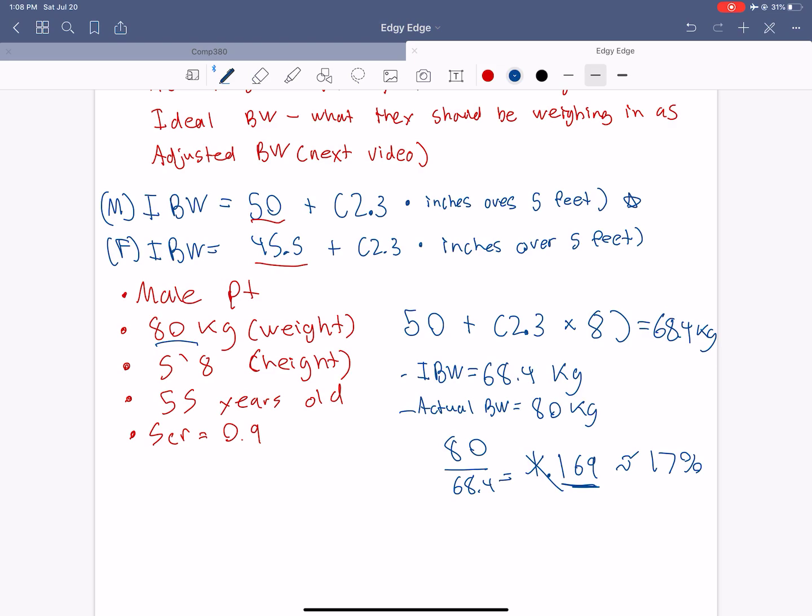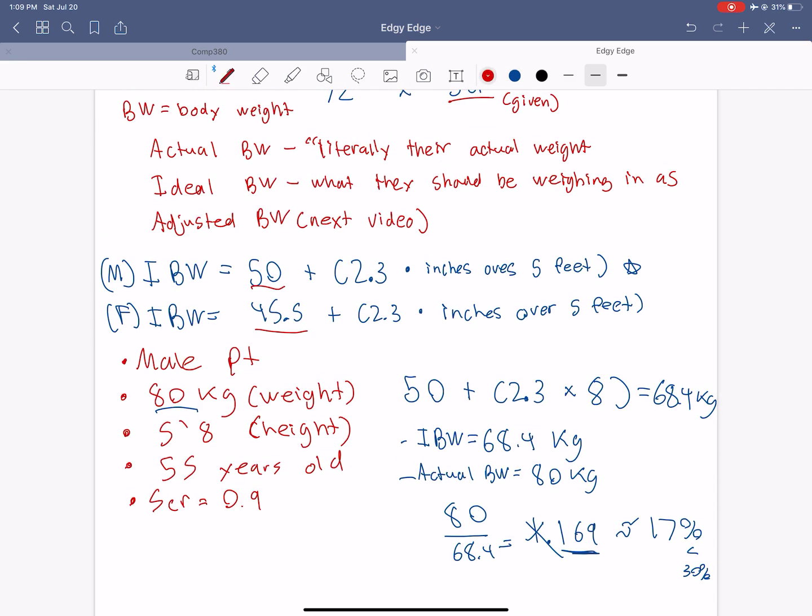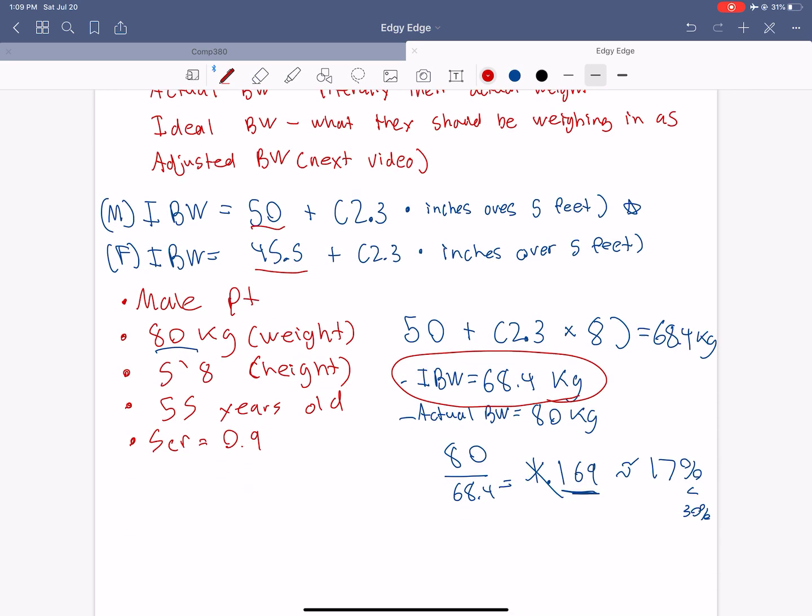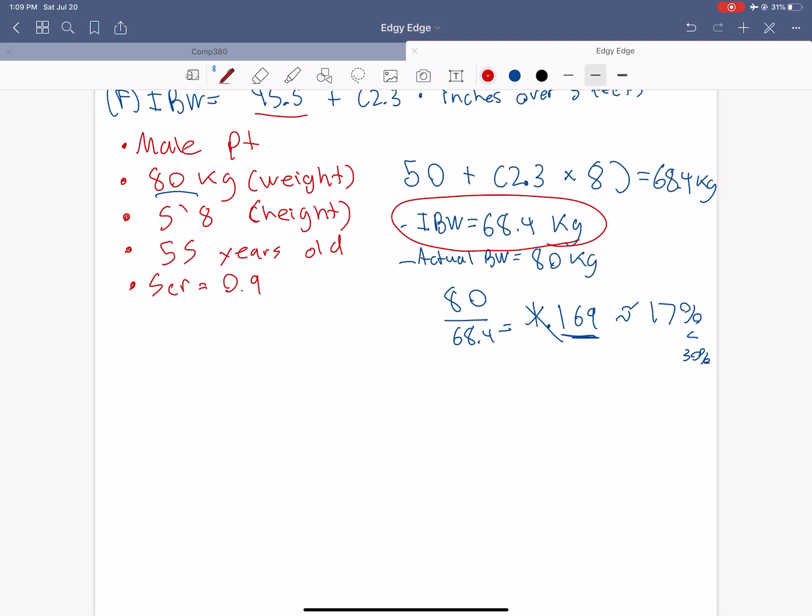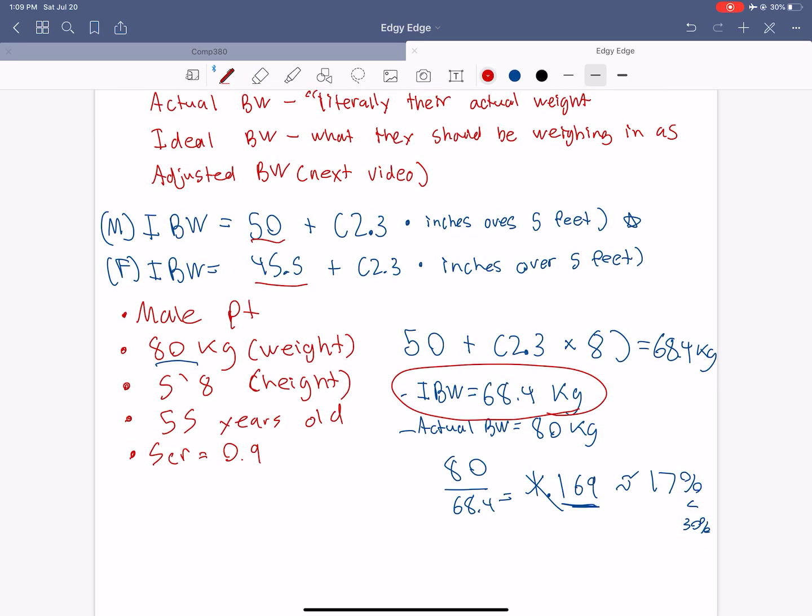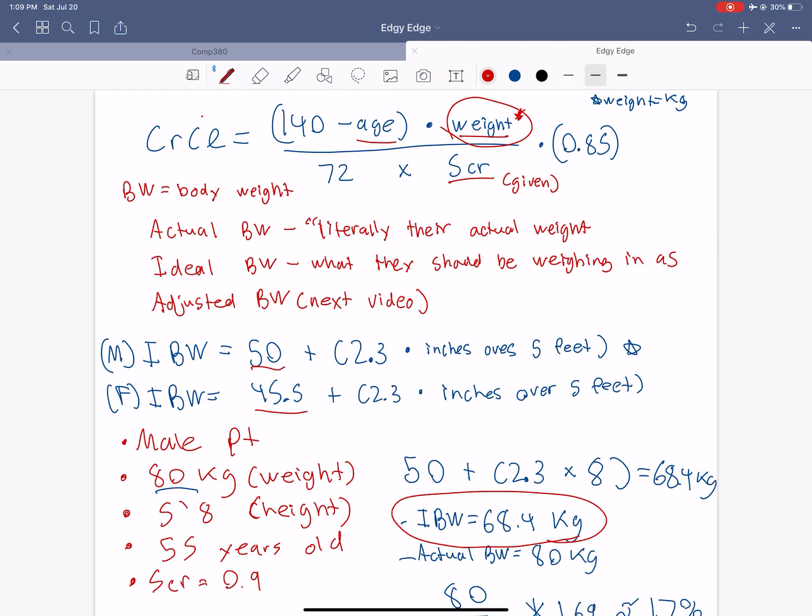So obviously, 17% over is less than 30%, because 30% is what institutions have decided. So because of that, we just use the ideal body weight in the calculation for creatinine clearance over here. So now let's do a quick calculation of the creatinine clearance, because we have all the other. So now we have the ideal body weight, we're going to use it in the formula over here.